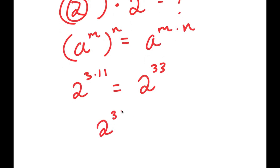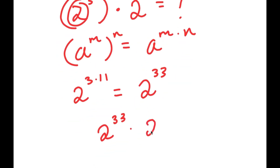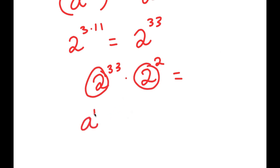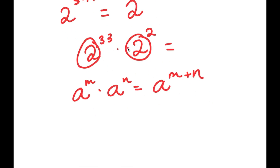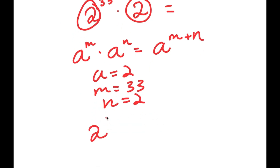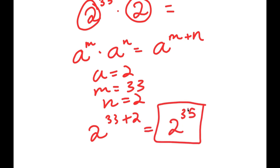So now I have 2 to the power of 33 times 2 squared. The last part is a fairly easy step. Because both bases are the same, if I have something in the form a to the power of m times a to the power of n, this equals a to the power of m plus n. So 2 to the power of 33 times 2 squared equals 2 to the power of 33 plus 2, which is 2 to the power of 35. This is my final answer — I can't simplify further because 2 to the power of 35 is a very large number.